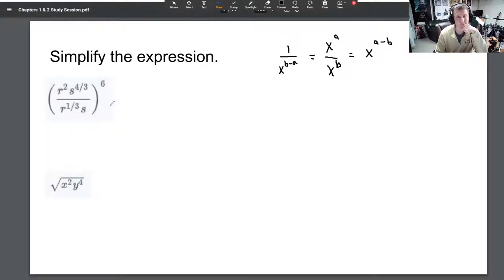Inside we have r squared times s to the four-thirds divided by r to the one-third times s to the first. Piece by piece here we're going to simplify this.